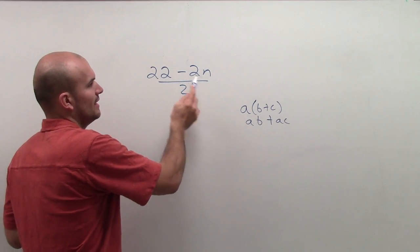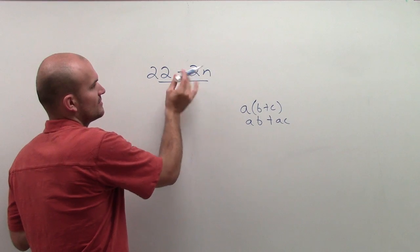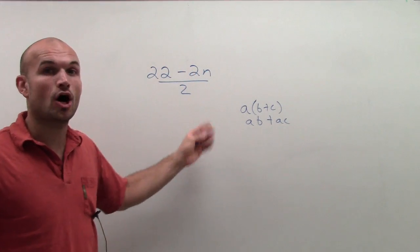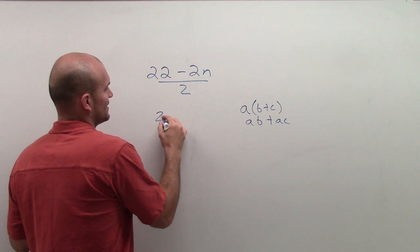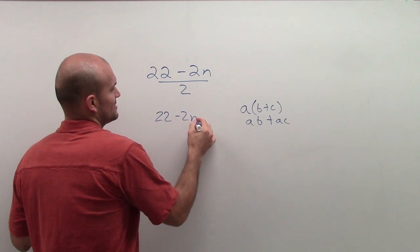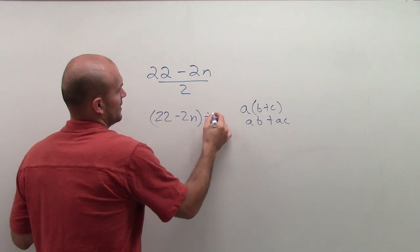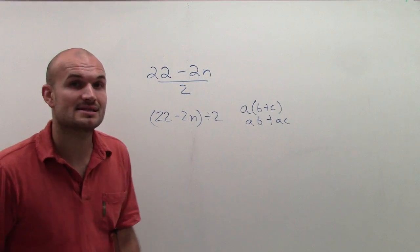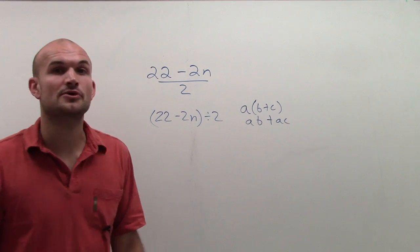So how can I rewrite this as a parentheses? Well, what I'm doing right now is I am taking 22 minus 2n, and I'm dividing it all by 2. So one thing I could write, you could take these two and say, in parentheses, I'm dividing both of those by 2.